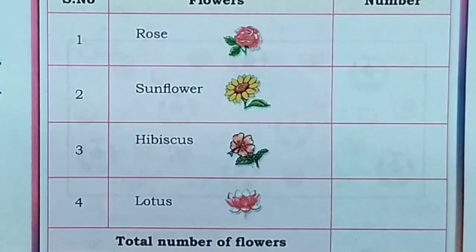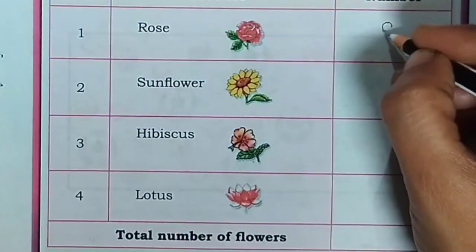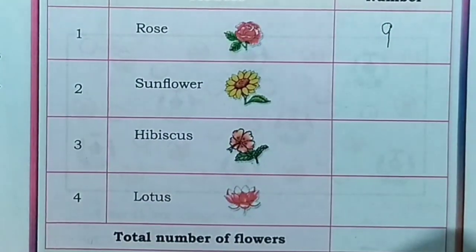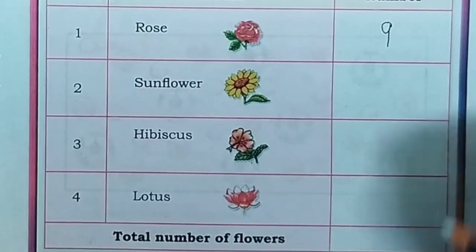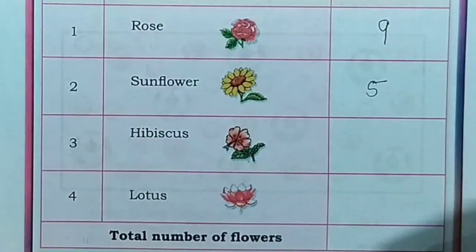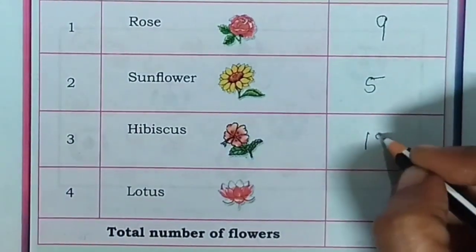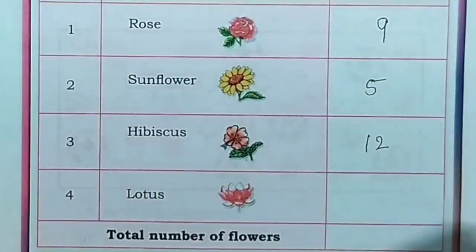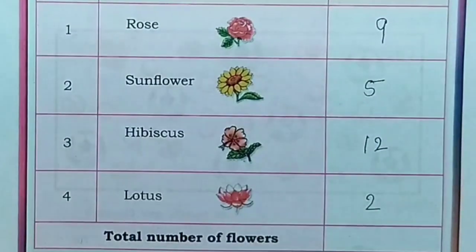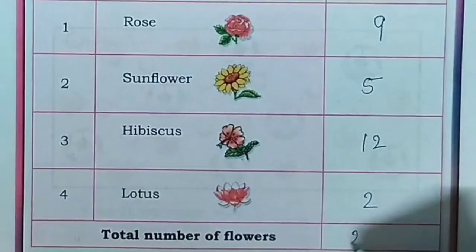The number of roses is 9. The number of sunflowers is 5. The number of hibiscus is 12. The number of lotus is 2. So the total number of flowers is 28.